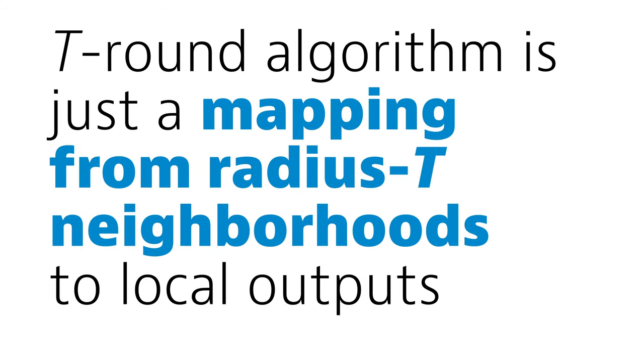So now we have got another equivalent way to define algorithms in the local model. An algorithm that runs in time t is simply a mapping from radius t neighborhoods to local outputs.